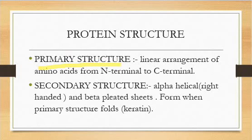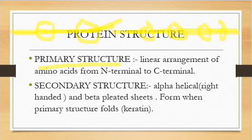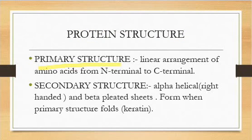Let's start with the primary structure. Primary structure is the linear arrangement of amino acids from the N-terminal to the C-terminal. On the left side is the N-terminal and on the right side is the C-terminal. These are joined via peptide bonds. When many amino acids are linked by peptide bonds in a linear arrangement from N-terminal to C-terminal, that particular structure is called the primary structure — it is simply a linear arrangement.